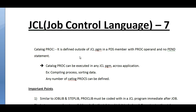In my last video, I was discussing about the in-stream proc. In this video, I would like to share with you all something about the catalog proc. As we all know, the proc is divided into in-stream proc and catalog proc. In-stream proc is part of the existing job, specific to a job. Whereas, catalog proc is coded in a common area where multiple jobs can access it.